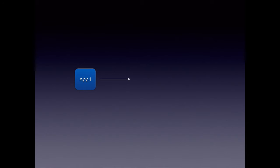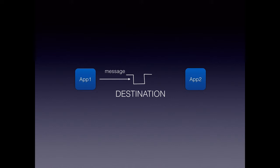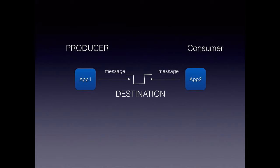In the world of messaging, we have an application or a component that sends or produces a message to a particular destination. Then we have another component within an application, or a separate application altogether, reading that message. So these two applications are completely decoupled — they need not know about each other. One application puts a message, the other one reads it. These two are called producer and consumer, or provider and client.